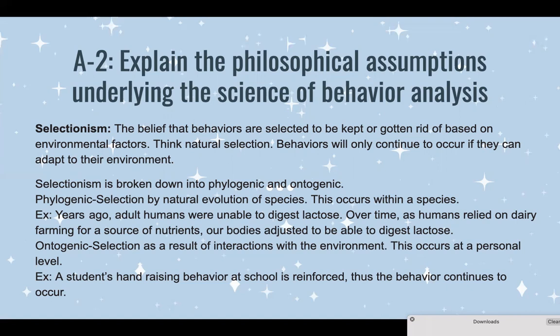Phylogenic is selection by natural evolution of species — that occurs within a species. Think years ago, adult humans were unable to digest lactose. Over time, we started to depend on dairy farming for a source of nutrients, and therefore our bodies as a whole species began to adjust to be able to digest lactose. Now the majority of human adults can digest lactose.